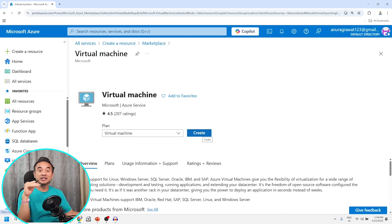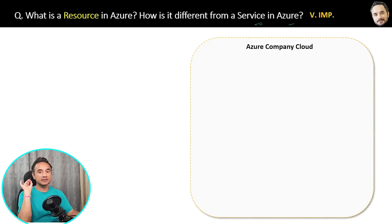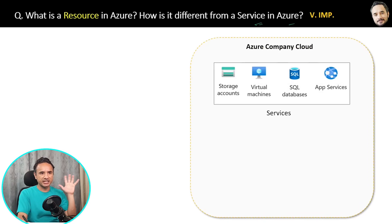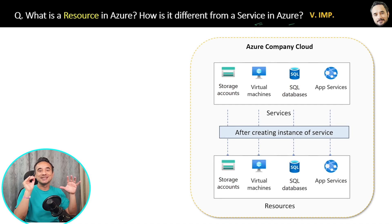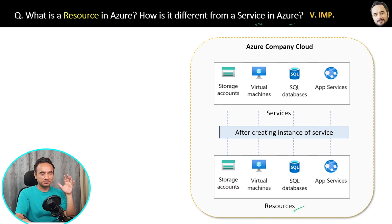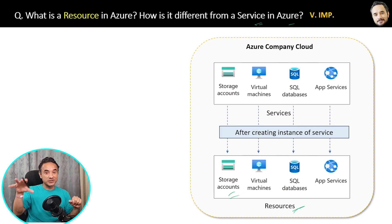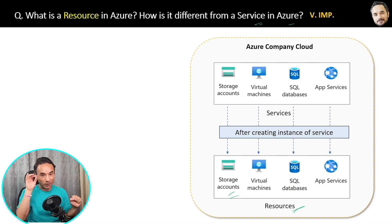I can create multiple resources in my Azure account from different services. In Azure there are many services: Storage Account, Virtual Machine, Database, and so on — all these are services. You can use these services by creating instances of them in Azure, and those created instances are called resources. A simple analogy: Azure service is like a class, and an Azure resource is like an object or instance of that class that actually does the real work.